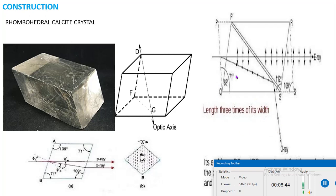The Nicol prism is constructed from the calcite crystal PQRS, having a length three times its width. Its end faces PQ and RS are cut such that the angle in the principal section becomes 68 degrees rather than 71 degrees, and 112 degrees rather than 109 degrees.